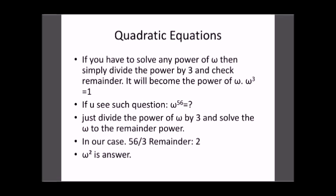If you have to solve any power of omega, take the given power and divide it by 3. The remainder tells you the result: if remainder is 1 the answer is ω, if remainder is 2 the answer is ω², and if remainder is 0 the answer is 1. For example, ω^56 — dividing 56 by 3 gives remainder 2, so the answer is ω².